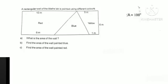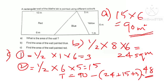Now our next activity is Activity 3. A rectangular wall of the math slab is painted using different colours. One rectangular wall, math slab, rectangular wall with different colours painted. What is the area of the wall? This area is 15 centimetres and the area of the wall is 6 centimetres. So L into B is 15 into 6 is equal to 90 square metres. So area of the wall is 90 square metres.